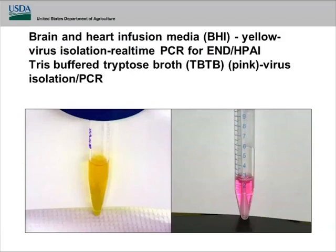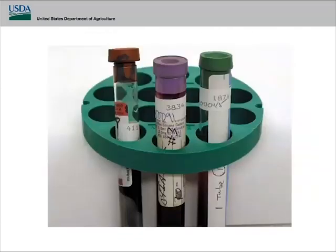Brain heart infusion media and TBTB are very similar medias. The real difference is TBTB contains a pH indicator. Under normal circumstances it should have a pink-red coloration — if it has that color, the pH is okay. BHI doesn't have that indicator and is bright yellow. If you send us a sample you think is in TBTB and it looks like BHI, that means the pH is around 14. As you get above pH 12, TBTB turns bright yellow; day-glow pink would indicate pH 3. You must tell me what media it's in so the color tells me something meaningful.